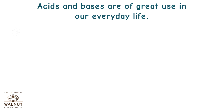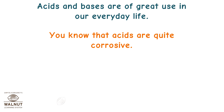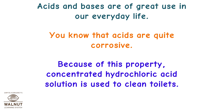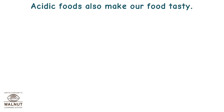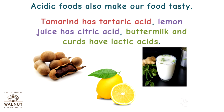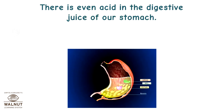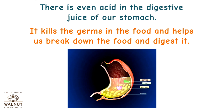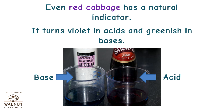Acids and bases are of great use in our everyday life. Because acids are quite corrosive, concentrated hydrochloric acid solution is used to clean toilets. Acidic foods also make our food tasty: tamarind has tartaric acid, lemon juice has citric acid, and buttermilk and curds have lactic acid. There is even acid in the digestive juice of our stomach — it kills the germs in the food and helps us break down and digest it. Even red cabbage has a natural indicator; it turns violet in acids and greenish in bases.